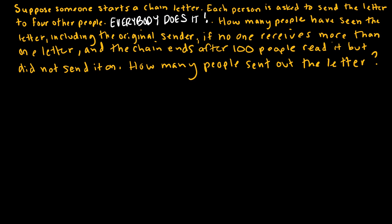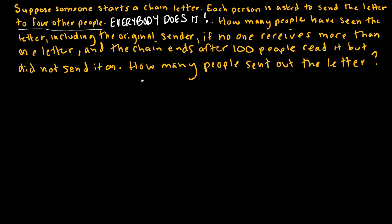Suppose someone starts a chain letter. A person gets a chain letter and sends it to four other people. Each of those people sends it to four others, and so on. The question says 100 people read it but don't send it on. Question one asks: how many people have seen the letter, including the original sender, if no one receives more than one letter and the chain ends after those 100 people?